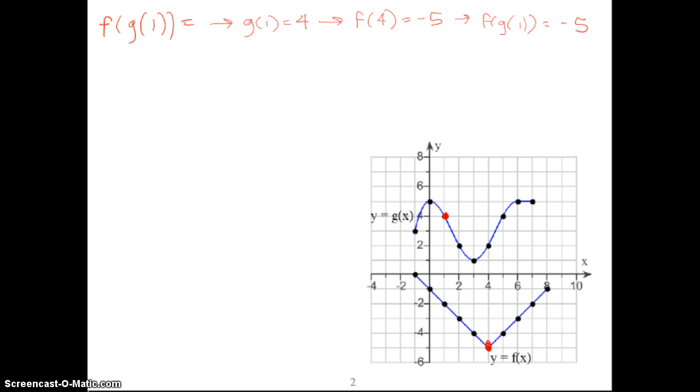Let's do it in green. Let's do another one. Let's do g of f of negative 1. So, again, we're going to first find f of negative 1. We're going to go from the inside out. So, f of negative 1, we go to the f function at x equals negative 1, and we see f of negative 1 here is 0.